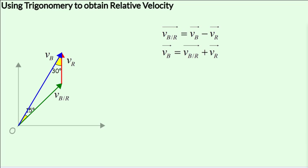Rearranging such that we have no vector subtraction, but only vector addition, we have V_B equals V_B with respect to R plus V_R. This would mean that V_B is the resultant vector obtained by the vector addition of V_B with respect to R and V_R.